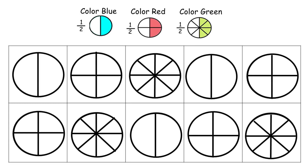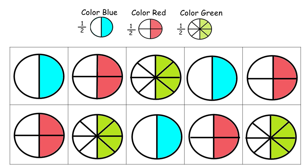Explain to kids that they are going to make equivalent fractions, all with the value of one-half. If the circle has two parts, color one part blue. If the circle has four parts, color two parts red. And if the circle has eight parts, color four parts green. This is a completed example.